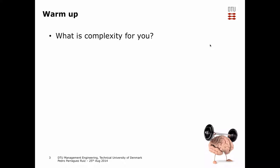Another participant offers a framework: there are unrelated concepts — order, complexity, the complicated, and chaos. Something complicated has somebody who knows all the details. Something complex you don't fully know how it works, but you can figure it out by setting up experiments. Chaos has no connection between elements.